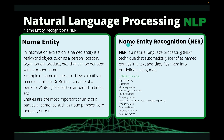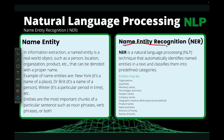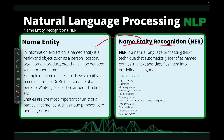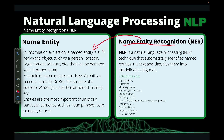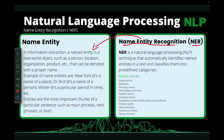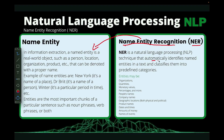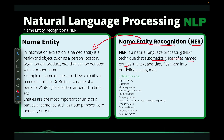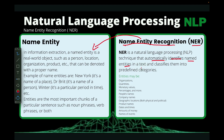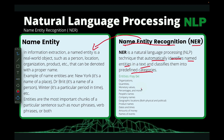Named entity recognition is nothing but recognizing those named entities — the keywords that you have in your dataset. It's a fancy name we use in NLP, shortened to NER. It is a natural language processing technique that automatically identifies named entities in text and then classifies them into predefined categories. We have several categories that any identified keyword or named entity could belong to.